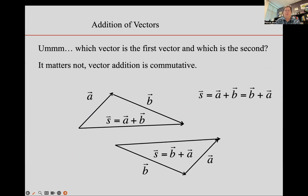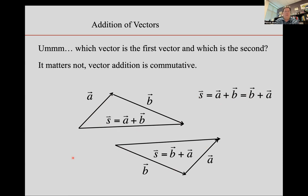You might be concerned because I said 'the first' and 'the second.' For addition, it doesn't matter which one you call first and which one you call second, because vector addition commutes. You get the same answer S whether you add A plus B or B plus A. If you imagine going A then B, you wind up at the same place as if you did B first and then A — it's the very same vector. So vector addition commutes.